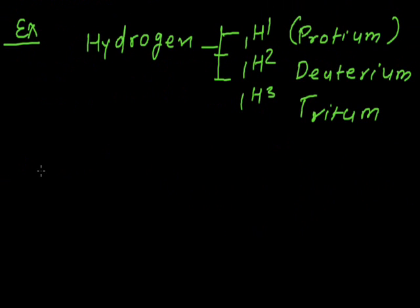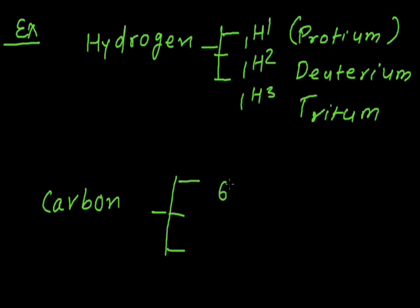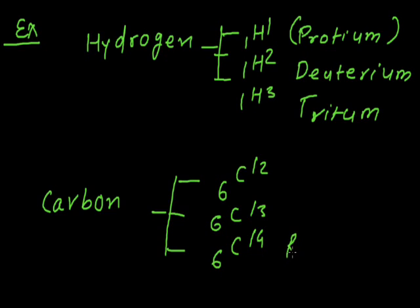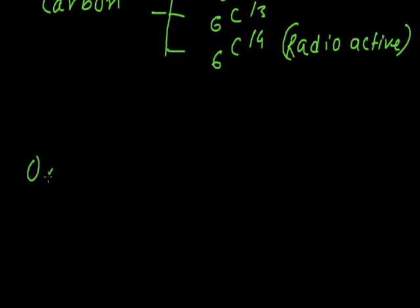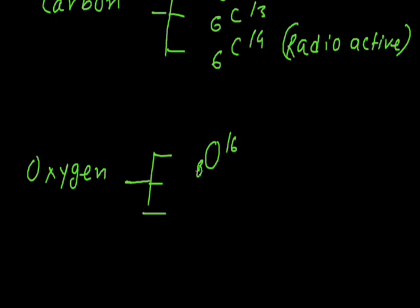Another example of isotopes is Carbon. Carbon also has three isotopes: the first one is 6C12, the second one is 6C13, and the last one is 6C14. 6C14 is the radioactive isotope of carbon. Similarly, Oxygen also has three isotopes: O8-16, O8-17, and O8-18.